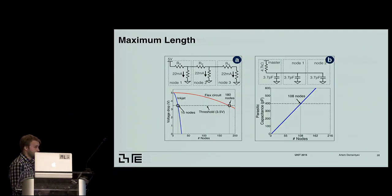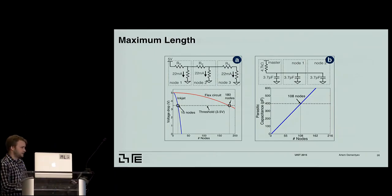But bigger thing was the parasitic capacitance, which kind of influences the communications, make them slower. So each sensor node adds some capacitance. So with that, we could get to 108 sensor nodes. So that was our limit.